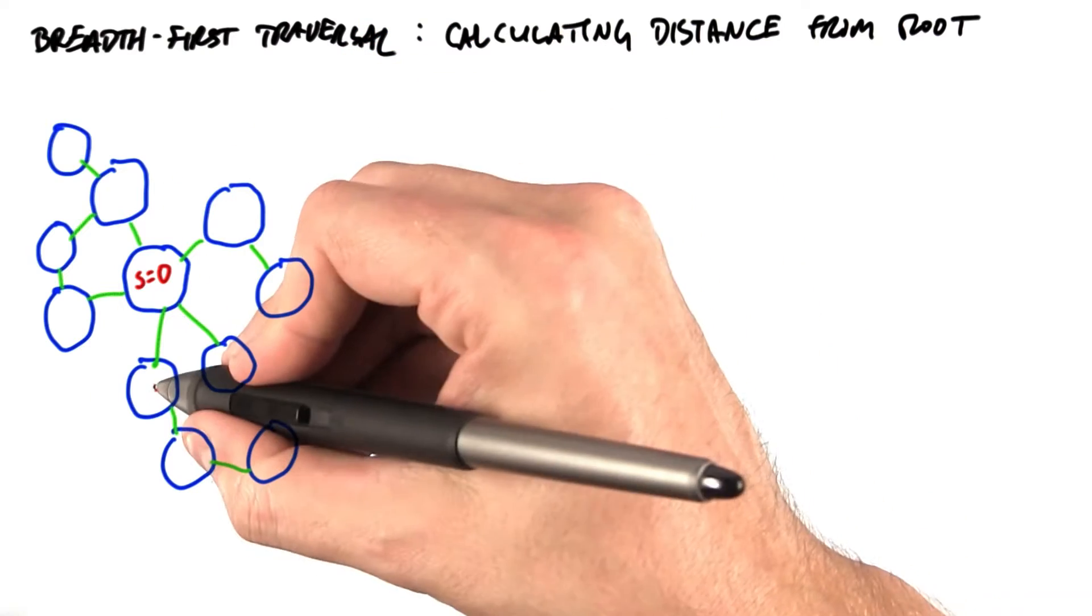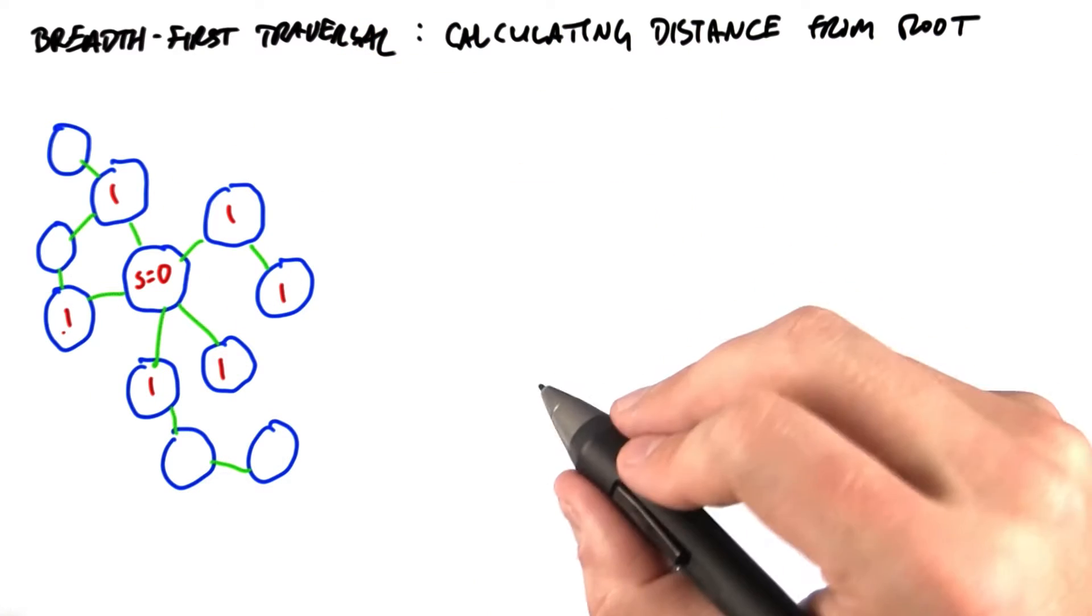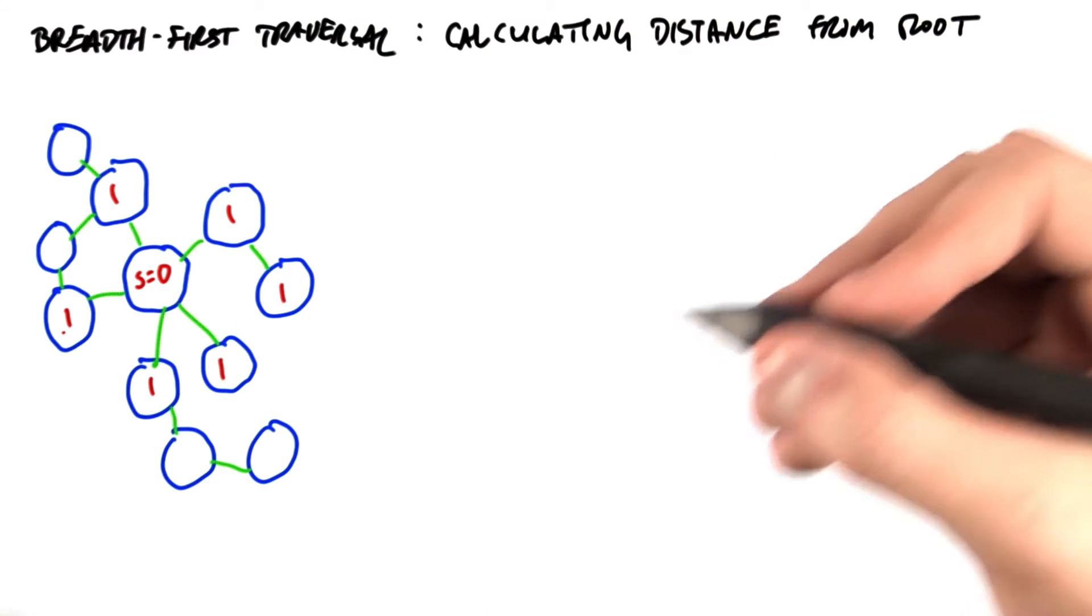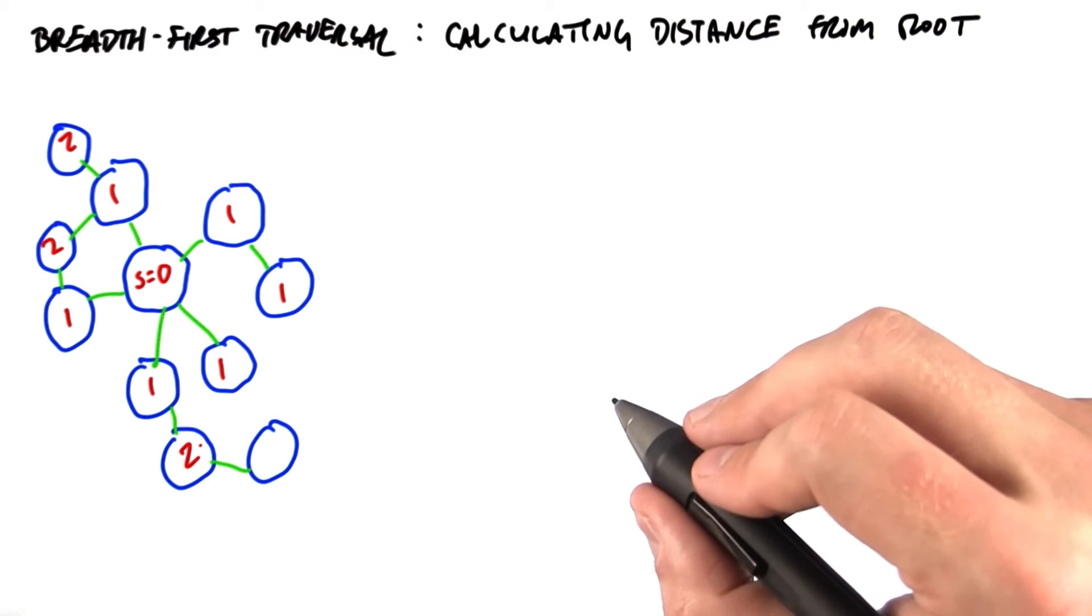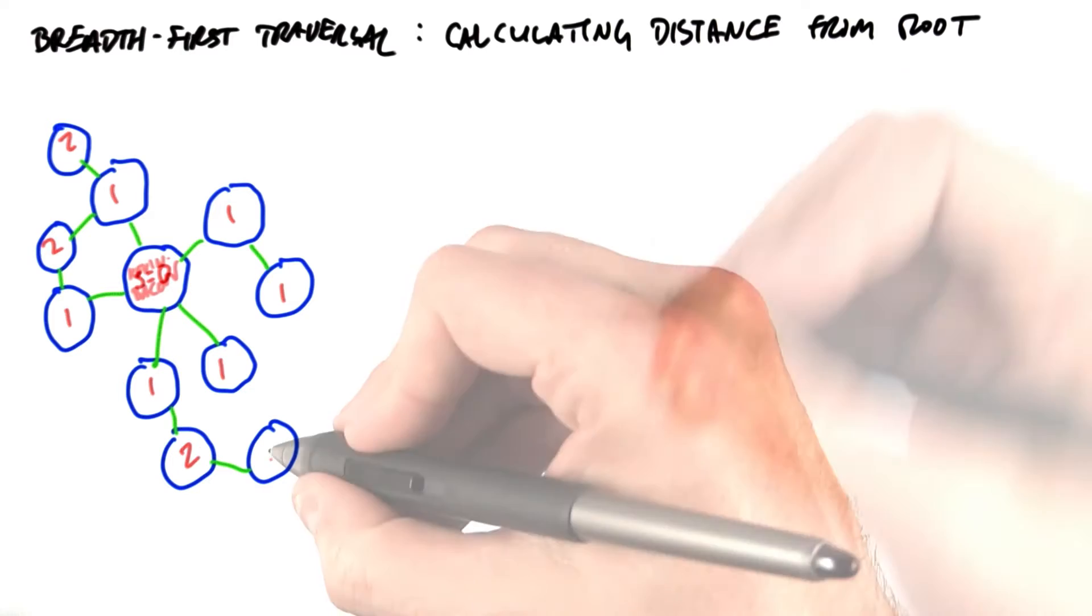So any neighbor of s has depth 1. Any neighbor of those neighbors that we haven't visited yet has depth 2. And in general, a neighbor of a node with depth d that hasn't already been visited has depth d plus 1.